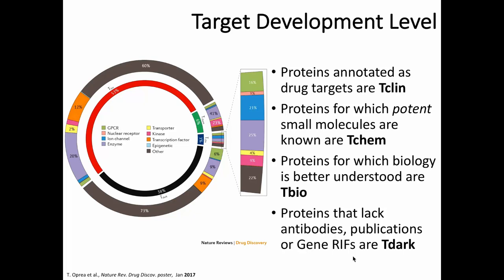The key point is that Tclin targets are well-studied with a lot of literature and many tool compounds, whereas at the other end, TDar proteins have very little known about them in terms of literature as well as published data. The aspect of published data is actually quite interesting, and we do find exceptions to the rule, which I'll come to later on.